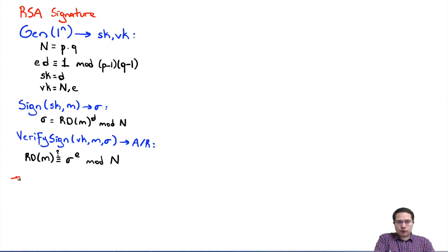The theorem we are going to prove today is as follows: If the RSA assumption holds, then this scheme that we defined is a secure signature scheme, meaning it is existentially unforgeable under adaptive chosen message attack. And this theorem is in the random oracle model. As usual, the way we prove these theorems is as follows.